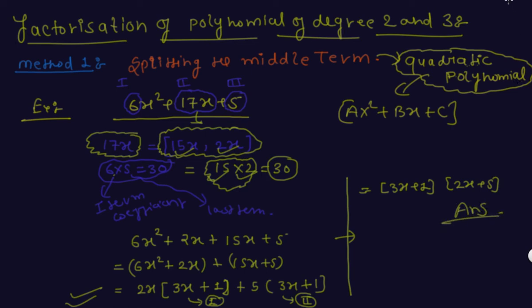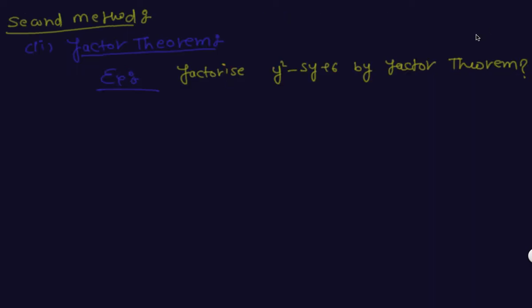Now we continue to the second method: the factor theorem. Let us factorize y² − 5y + 6 by the factor theorem. We assume the polynomial p(y) = y² − 5y + 6.